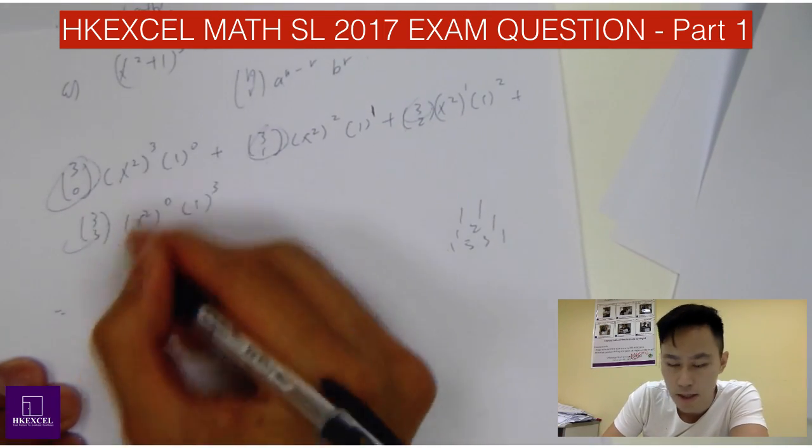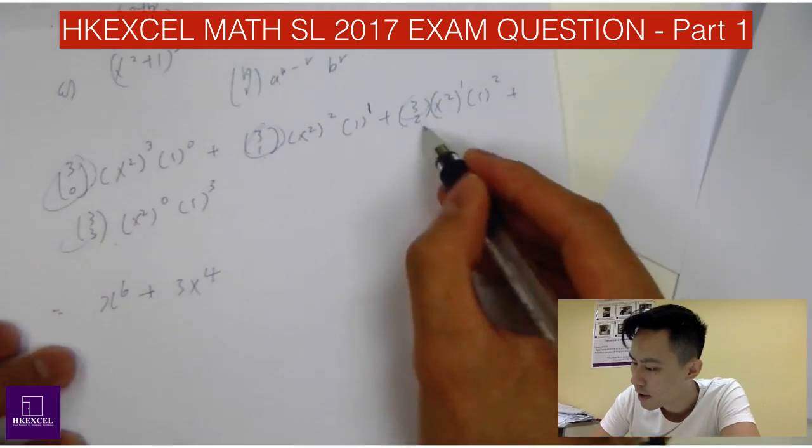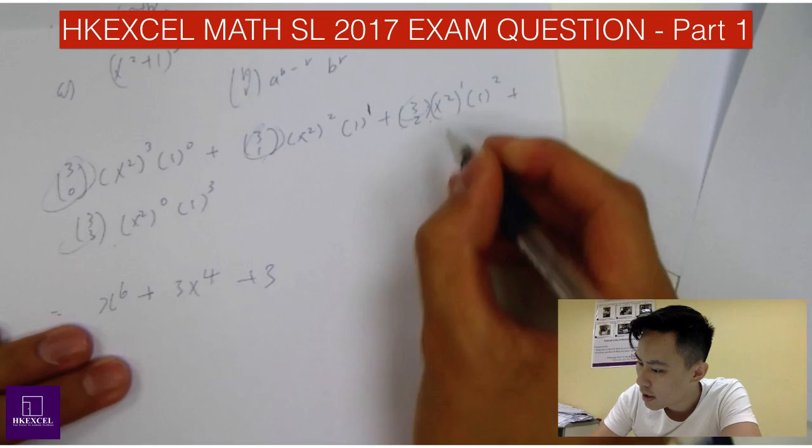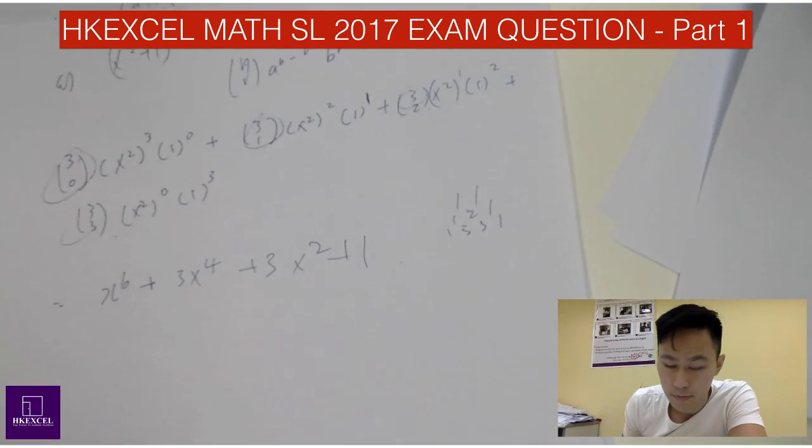So 1 times this is x^6 and then plus 3 times this, x^4 and then plus 3, this is just x² and then finally it will be just 1.